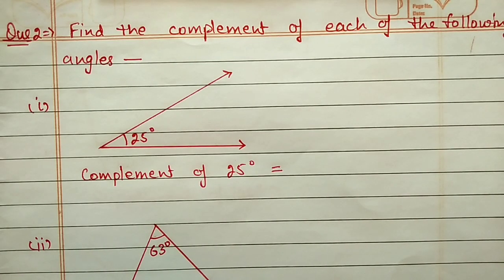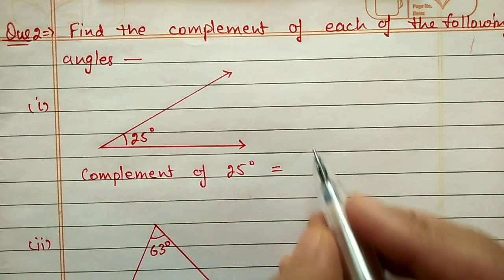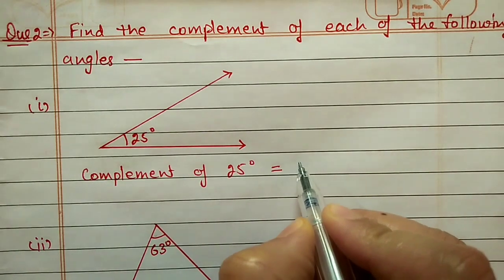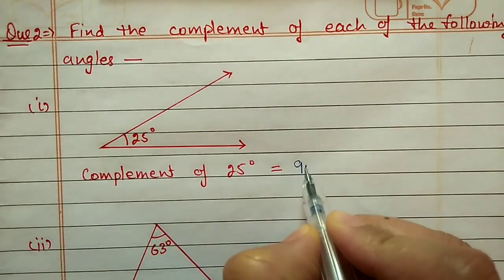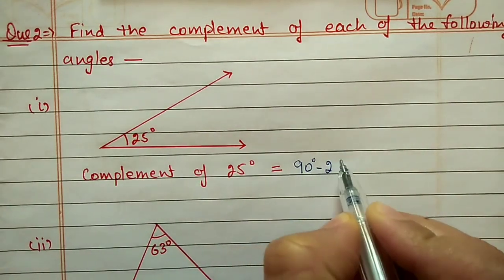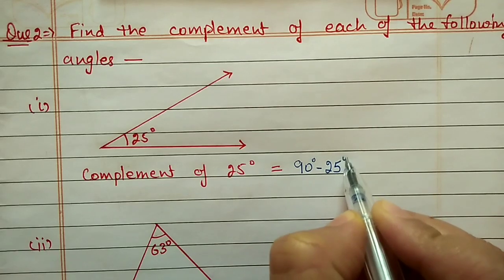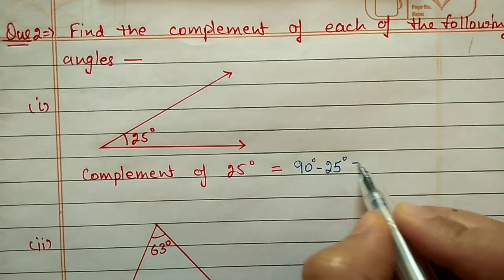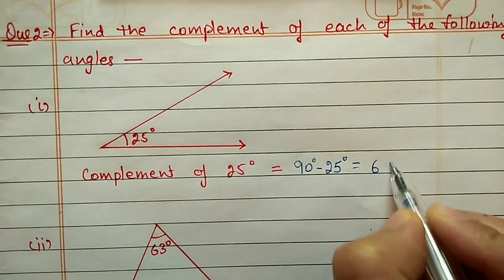Question number two: find the complement of each of the following angles. The first angle is 25 degrees. The complement of 25 will be 90 minus 25, which equals 65 degrees.